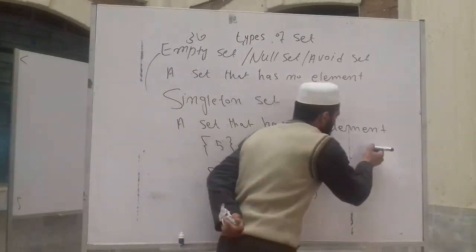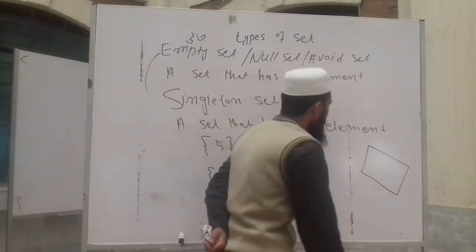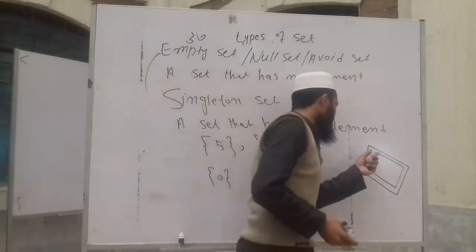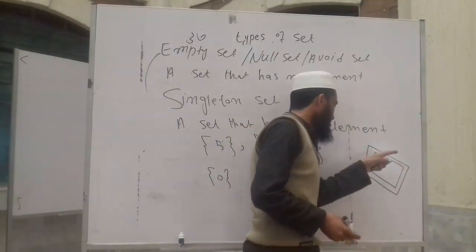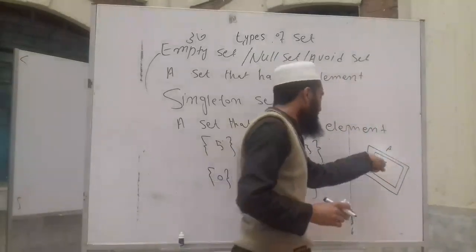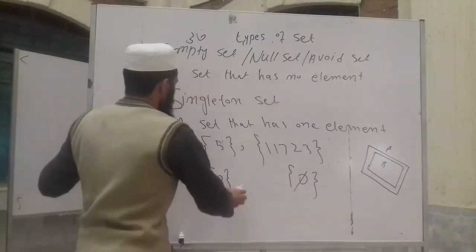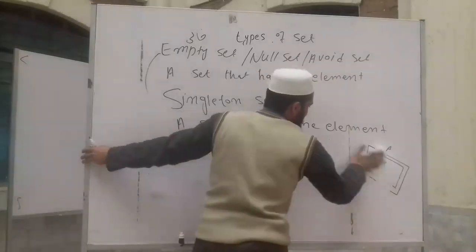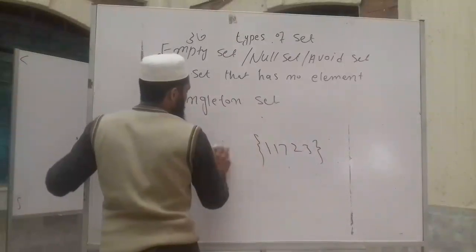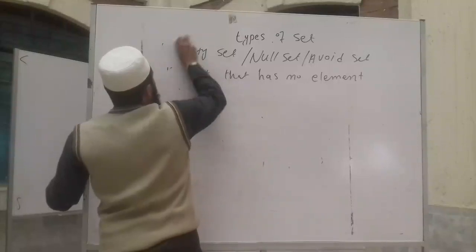For example, when I use this box — if the box is empty, it is an empty set. If the box has one element, it is a singleton set. So we have an empty set when there is no element, and a singleton set when there is one new element.